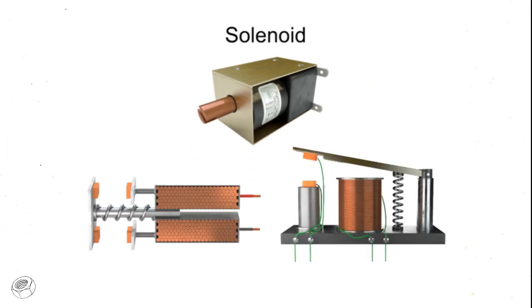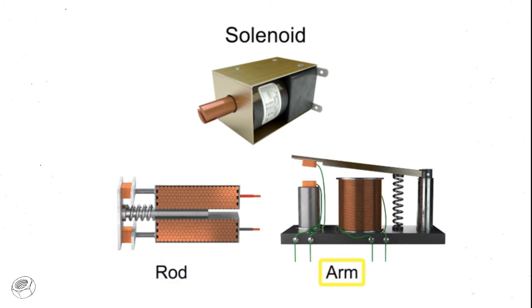At its most basic level, a solenoid is an electromagnetic coil that uses magnetism produced by the flow of current to physically move the armature of a solenoid. The armature that is movable can be a rod or a metallic arm.